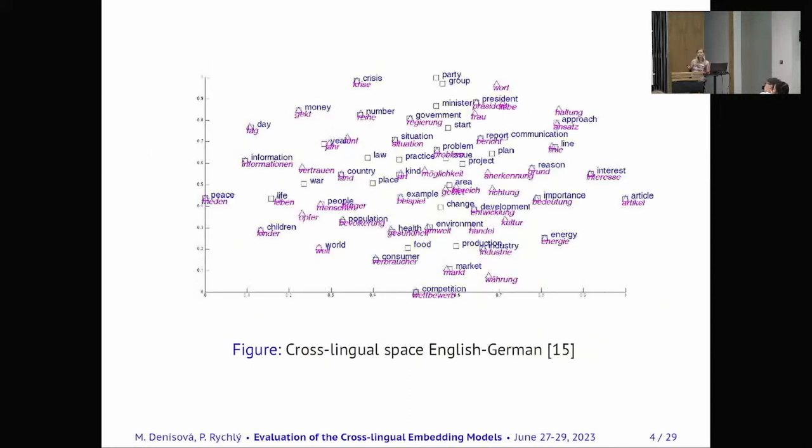I have a closer picture, so you can see that this is the cross-lingual space of English and German, so you can see that similar words are close to each other, so for example information and information are together.